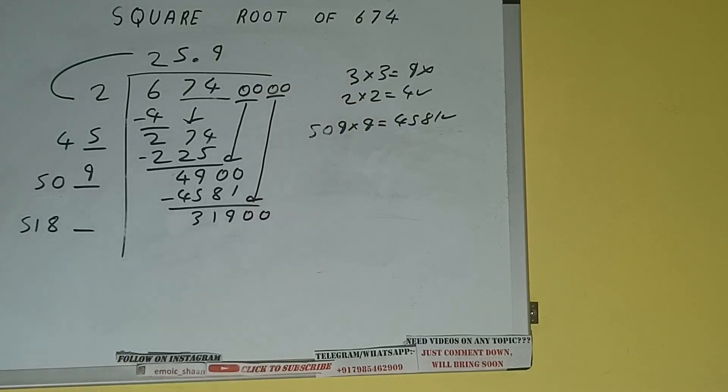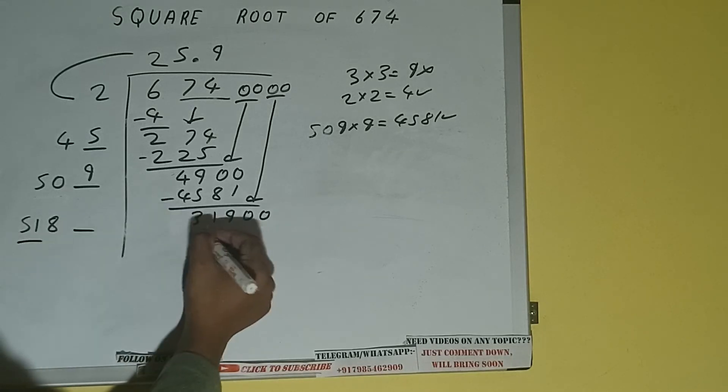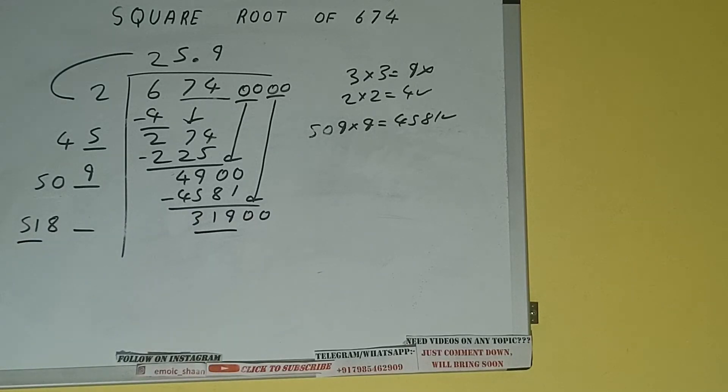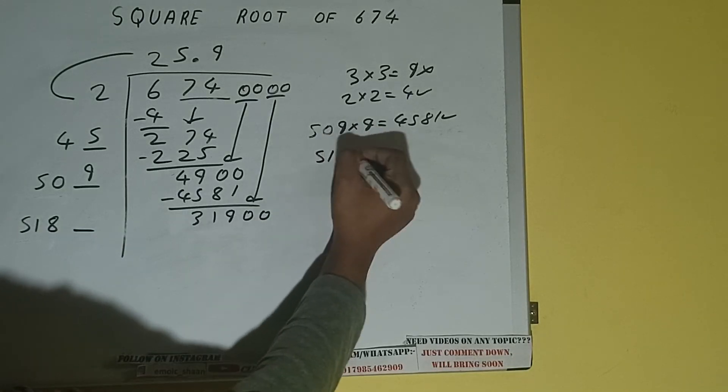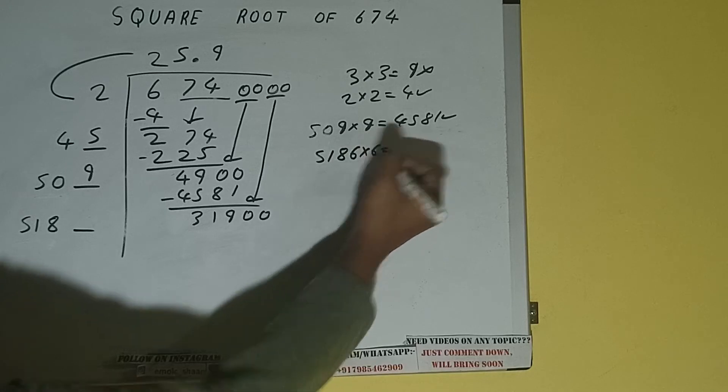And this number we need to make it big, so bring the next pair of zeros down, and it will be 31,900. Compare this: 51 and 319, so 51 times 6 is 306, so we can try 6 times. So 5186 into 6 we can try.